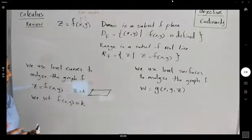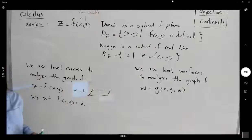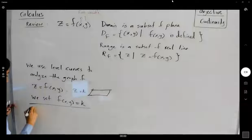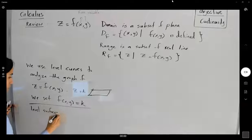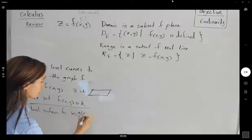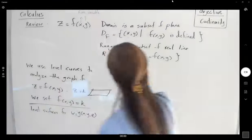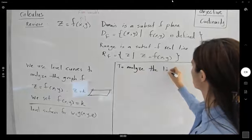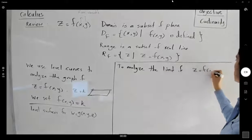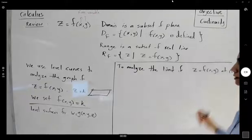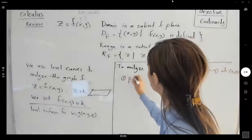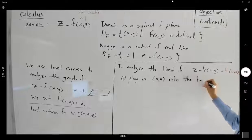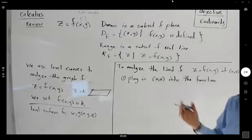We talked about the graph, and then we were interested in analyzing the limit of a function. To analyze the limit of z equals f of x and y at (0, 0), we have some steps. Step one: plug in (0, 0) into the function. If it gives you a unique number, then you're done — that's the limit of your function.